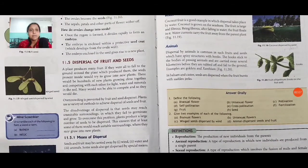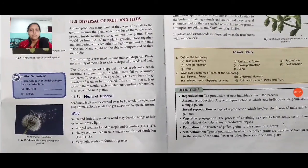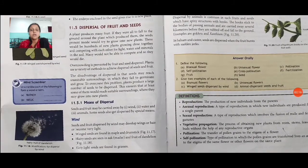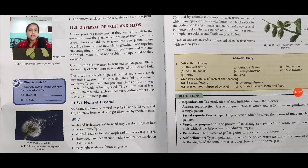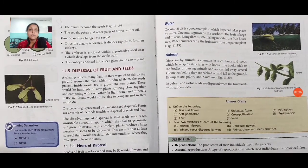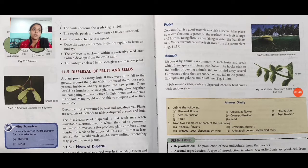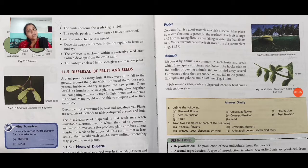Means of dispersal: seeds and fruit may be carried away by rainwater and animals. Water dispersal: coconut fruit is a good example in which dispersal takes place by water. Coconut is grown on sea soil. The fruit is large and fibrous; after falling in water the fruit floats, and water currents carry the fruit away from the parent plant to where they stop and start to grow. Most coconut trees can be seen on the beach or on the bank of rivers.